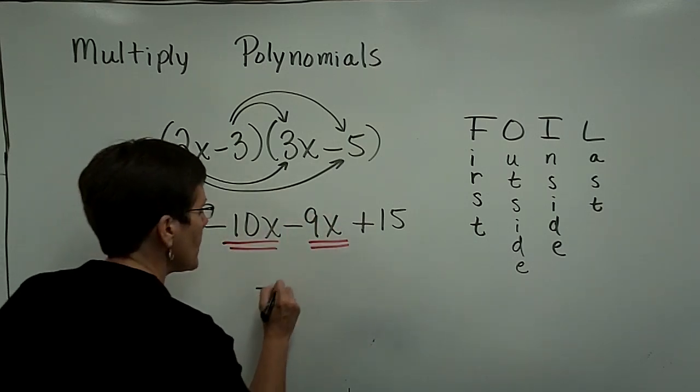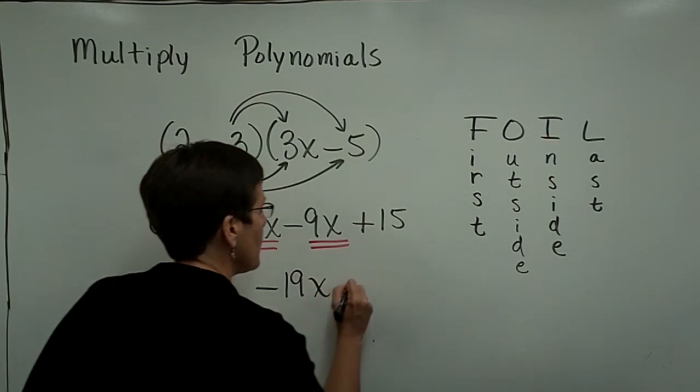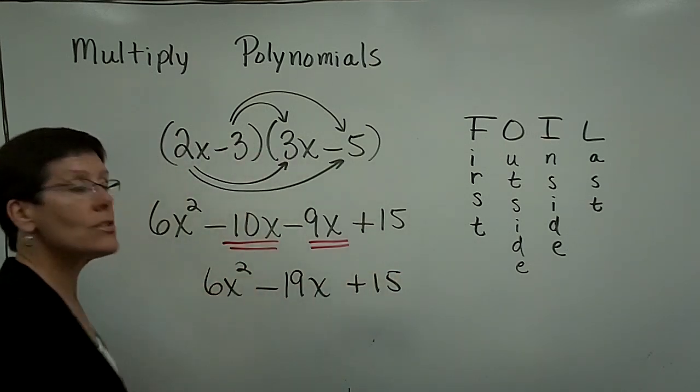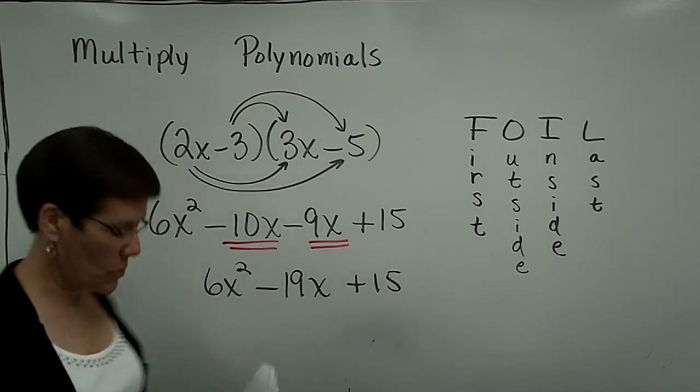For a total of a negative 19. And I'll bring down my first and my last terms. And I've successfully multiplied those two binomials.